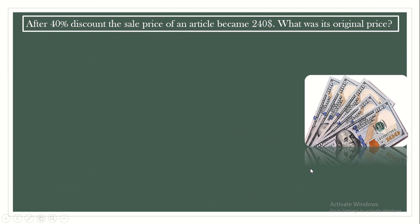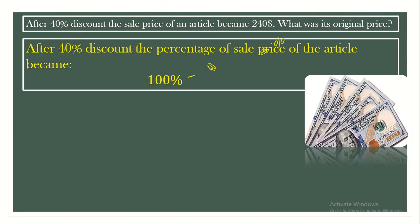Another question. After a 40% discount, the sale price of an article became $240. We have the percentage of discount and the sale price. The original price represents 100%. After a 40% discount, what is the percentage of the sale price? It's 100% minus 40%, which gives us 60%.